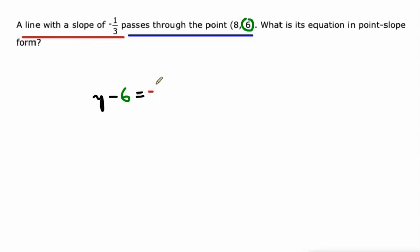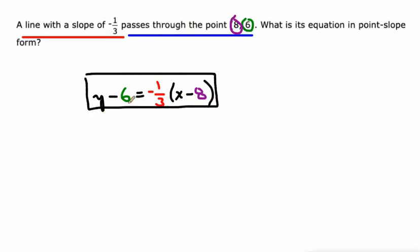Times x minus our x value. And our x value is going to be 8. And that's our equation. Done. It's that simple. Y minus our y value equals slope times x minus our x value. Let's do it again.